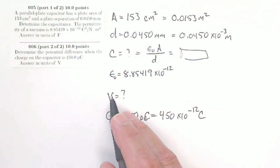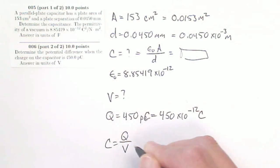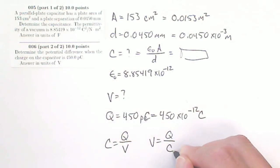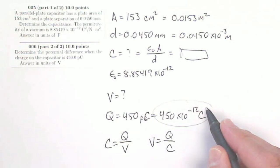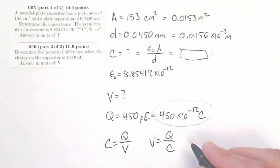and I'm looking for a V. I know that C equals Q over V, so V is going to equal Q over C. So if I take my Q and divide it by my C, I will get my potential difference between those two plates.